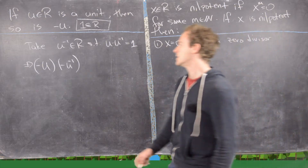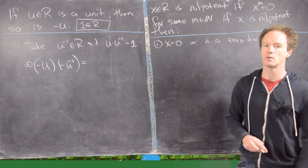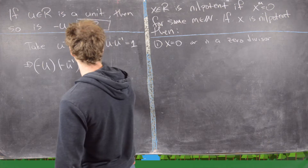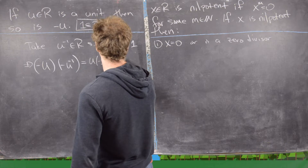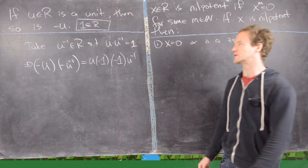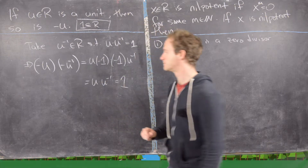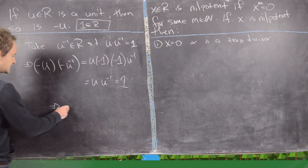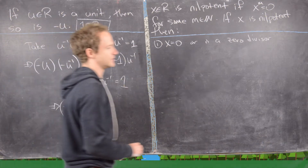Using associativity and our preparatory lemmas, negative u times negative u-inverse equals u times negative 1 times negative 1 times u-inverse. That gives us negative 1 squared in the middle, which equals 1. So the whole thing is u times u-inverse, which equals 1. This tells us that the inverse of negative u is negative u-inverse, proving that negative u is also a unit.